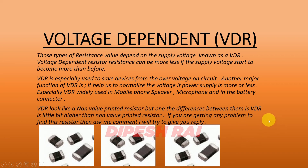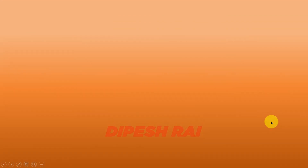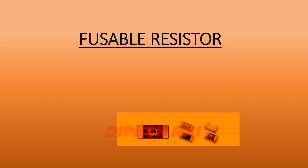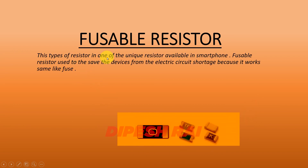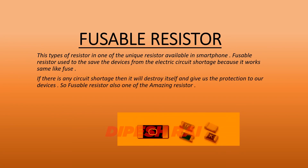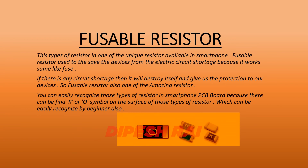Now let's move on to the last and fourth type of resistor, which is the fusible resistor. You can see here the fusible resistor looks like this. It works like a fuse. This type of resistor is one of the unique resistors available in smartphones. The fusible resistor is used to save devices from electric circuit shortages because it works the same as a fuse. If there is any surge, it will destroy itself and give protection to our devices. You can easily recognize these types of resistors in smartphone PCB boards.